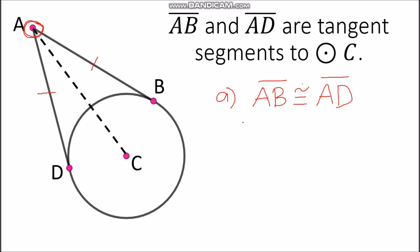We can also draw a segment from the external point going to the center of the circle. After connecting the external point and the center, there are angles formed. We have angle DAC and also angle BAC.